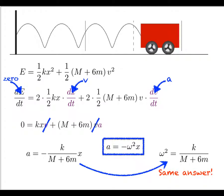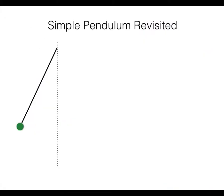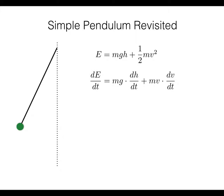You might be wondering whether this energy technique works in other contexts, and the answer is yes. Let's apply it to the simple pendulum. The energy of the simple pendulum is the potential energy mgh plus the kinetic energy one-half mv squared. Taking the derivative of energy with respect to time, we recognize that h and v are both functions of time, so we apply the chain rule to get the appropriate expression.